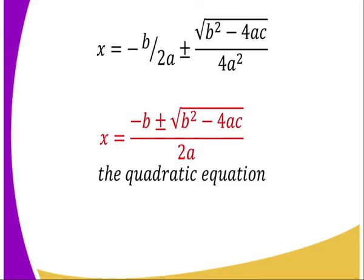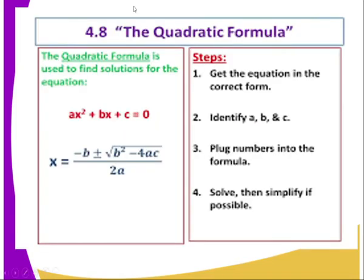That is the formula we use — we refer to it as the quadratic formula, used to solve the quadratic equation. The quadratic formula is: x equals negative b plus or minus the square root of b squared minus 4ac, all divided by 2a.